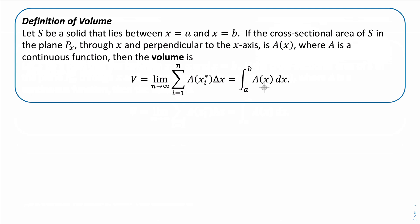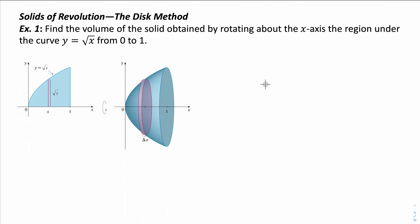Let's take a look at an example. We want to find the volume of the solid obtained by rotating about the x-axis the region under the curve y equals the square root of x from 0 to 1. We have the curve y equals √x going from 0 to 1, rotating about the x-axis. When we rotate it, the two-dimensional figure fills in all of this space to give us a three-dimensional shape — like a solid parabola filled in.